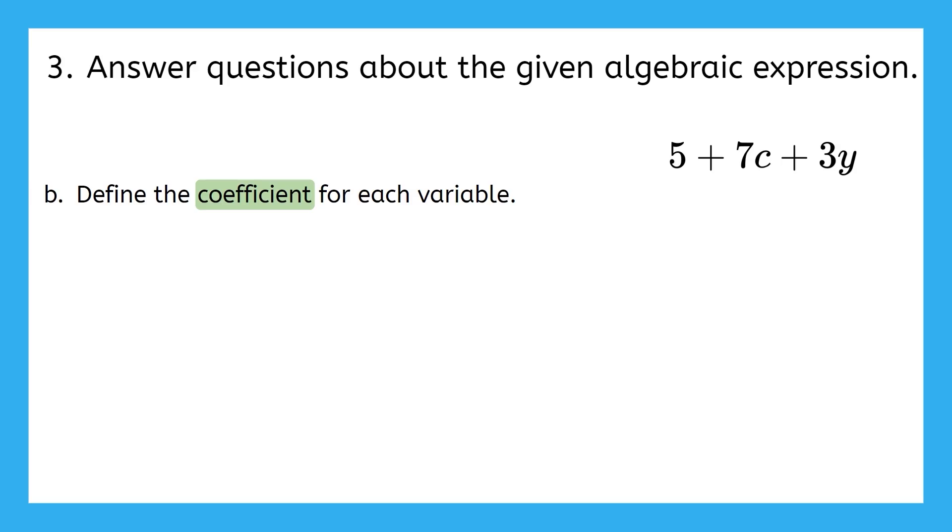In this expression, seven is the coefficient of C, and three is the coefficient of Y. That means we have seven C's and three Y's in this expression. There could also be more than one constant in an expression. What constants did you see in the expression? This expression actually only has one constant, and it's five.